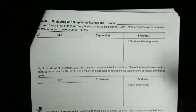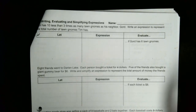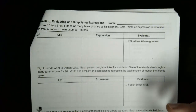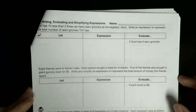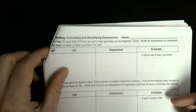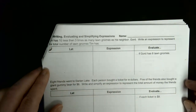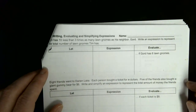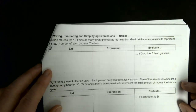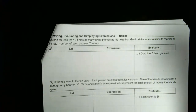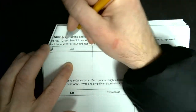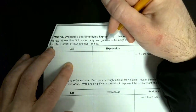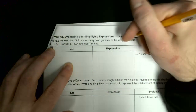This is kind of like translating — we're taking a situation and writing it using math. We're going to use numbers, symbols, and variables, and then see if we can evaluate it if we have enough information. On page 21 it says: Tim has 10 less than three times as many lawn gnomes as his neighbor Gourd. Write an expression to represent the total number of lawn gnomes Tim has.